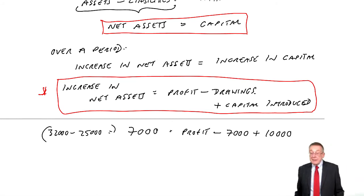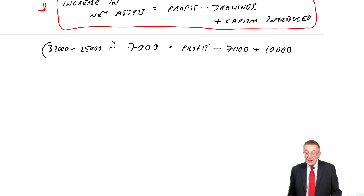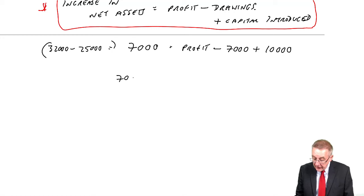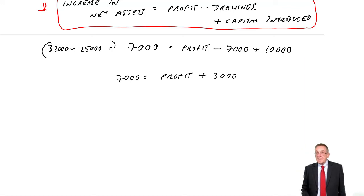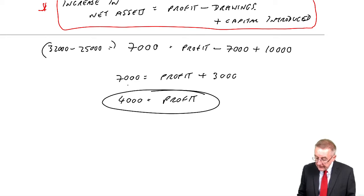That must equal the profit, which is what we're trying to find, minus any drawings - the drawings were 7,000 - plus any capital introduced, which was 10,000. We want the profit, it's the missing figure. 7,000 equals the profit minus 7 plus 10, which is plus 3,000. If we subtract 3,000 from both sides, 7,000 minus 3,000 is 4,000. The profit is 4,000.